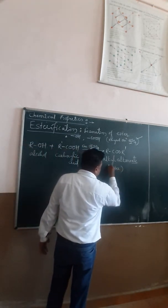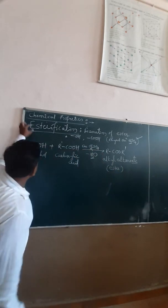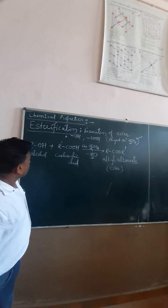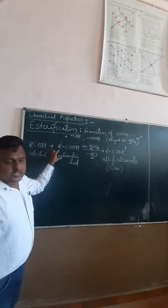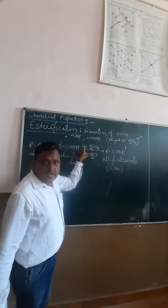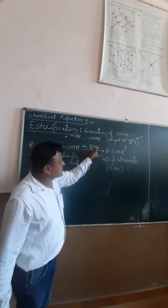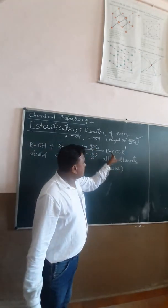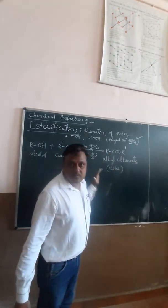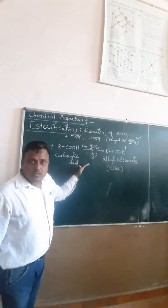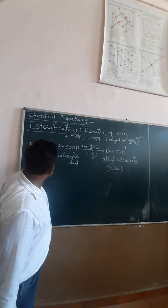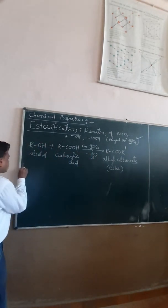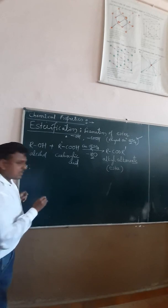This process is known as esterification. The definition: when alcohol reacts with carboxylic acid in the presence of a dehydrating agent — concentrated sulphuric acid — to form an ester, it is called esterification. This is also an important question for your second-year annual examination, so keep it in mind.